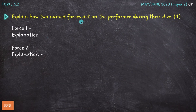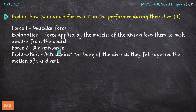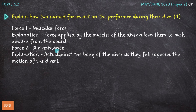The next question asks: explain how two named forces act on the performer during their dive, for four marks. The first force I've gone for is muscular force — the force applied by the muscles of the diver allows them to push upwards from the board. The muscles contract at the point of takeoff, and that force pushes the diver into the air at the start of their dive. The second force is air resistance, which acts against the body of the diver as they fall, opposing their motion. As they accelerate falling through the air, the air resistance force increases, because air resistance increases the faster we are moving.